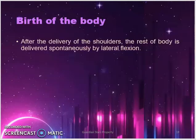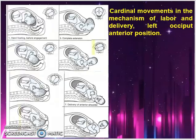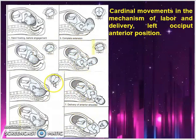After the birth of both shoulders, there is birth of the body. The rest of the body is born spontaneously by lateral flexion as well. The next slide provides a summary of these stages of the mechanism of labor.